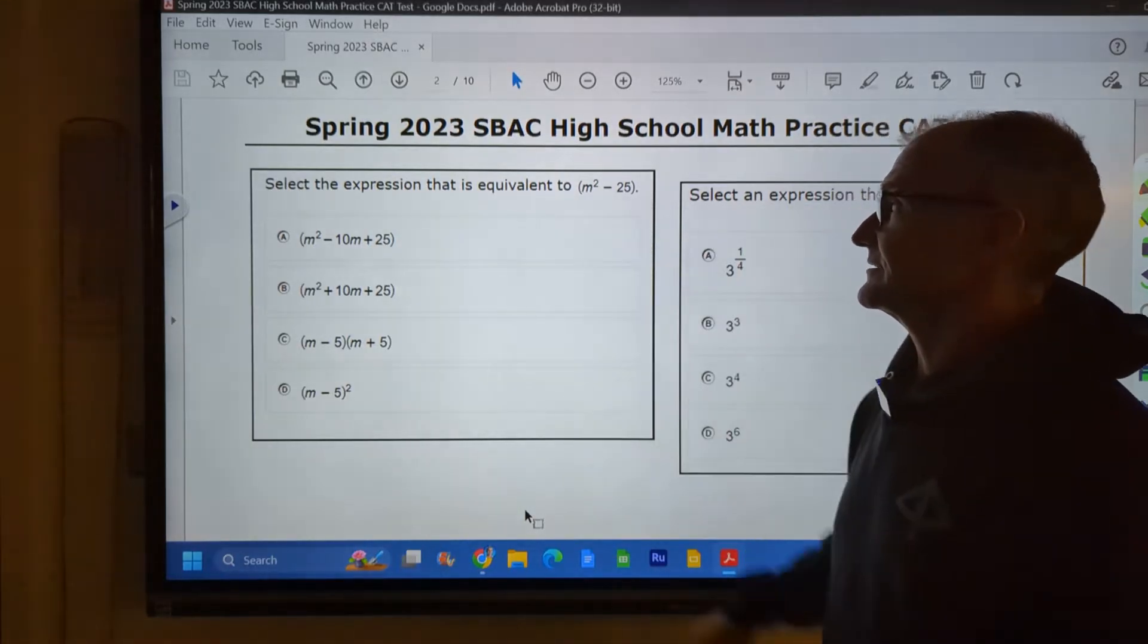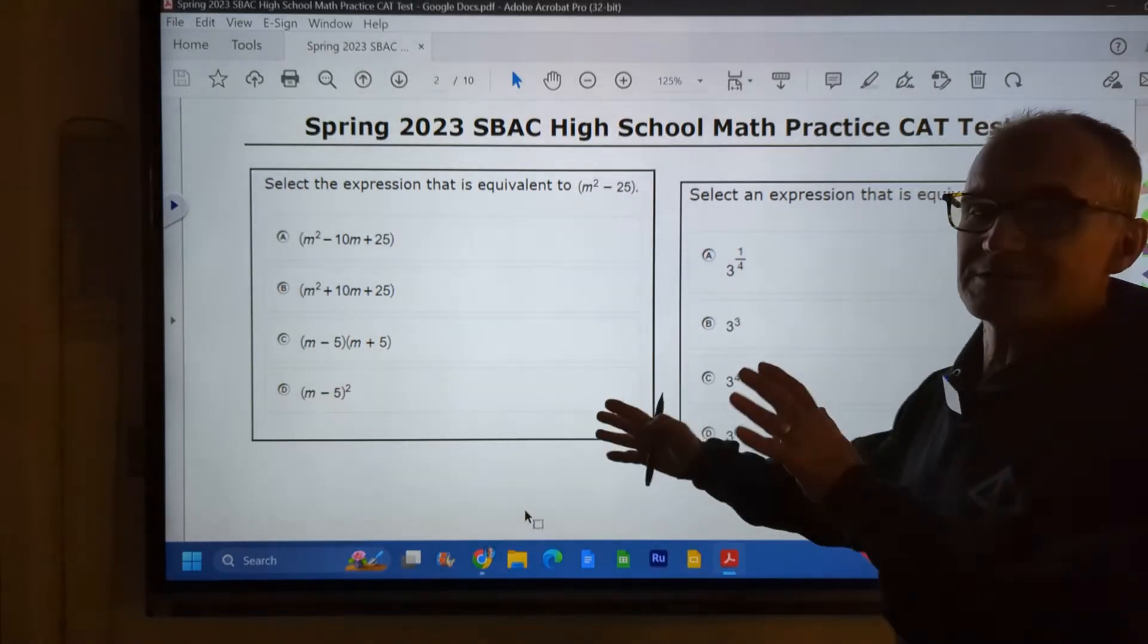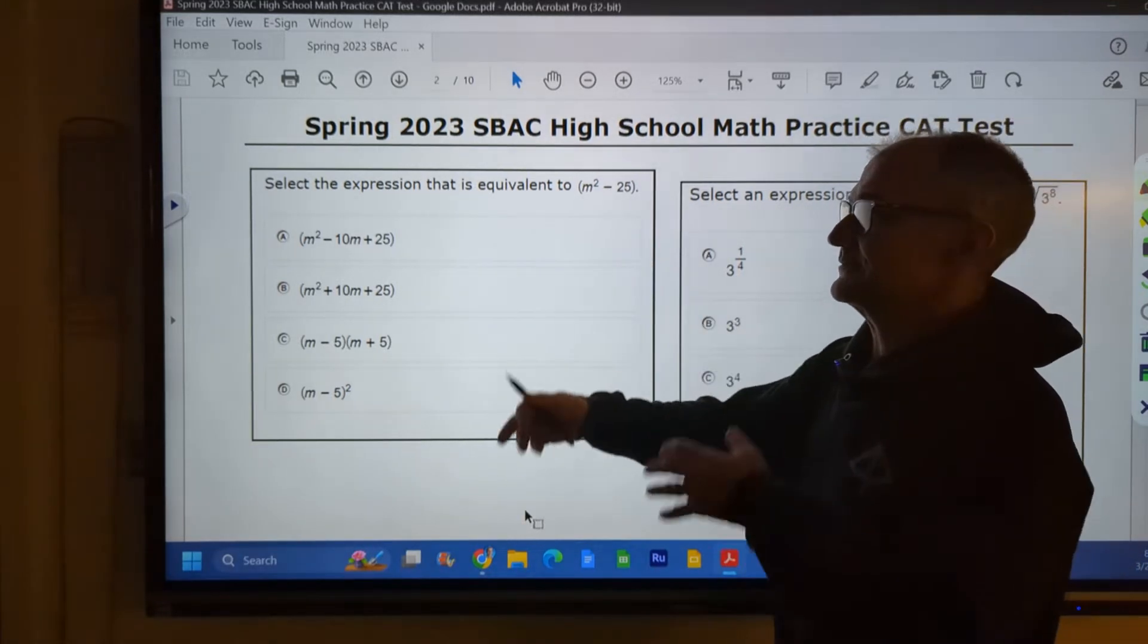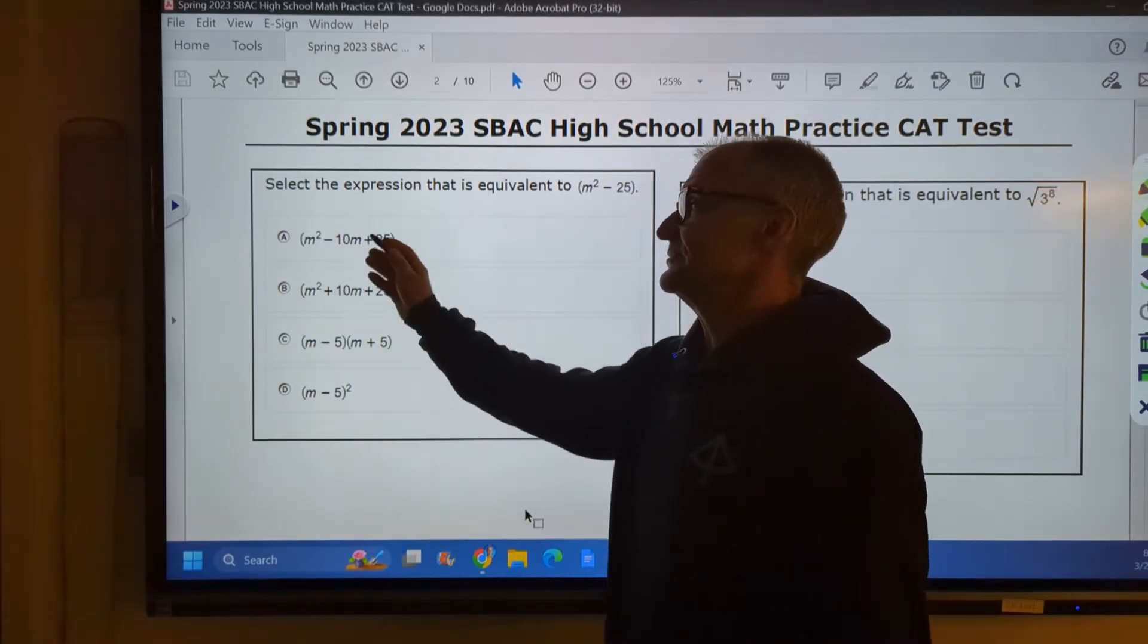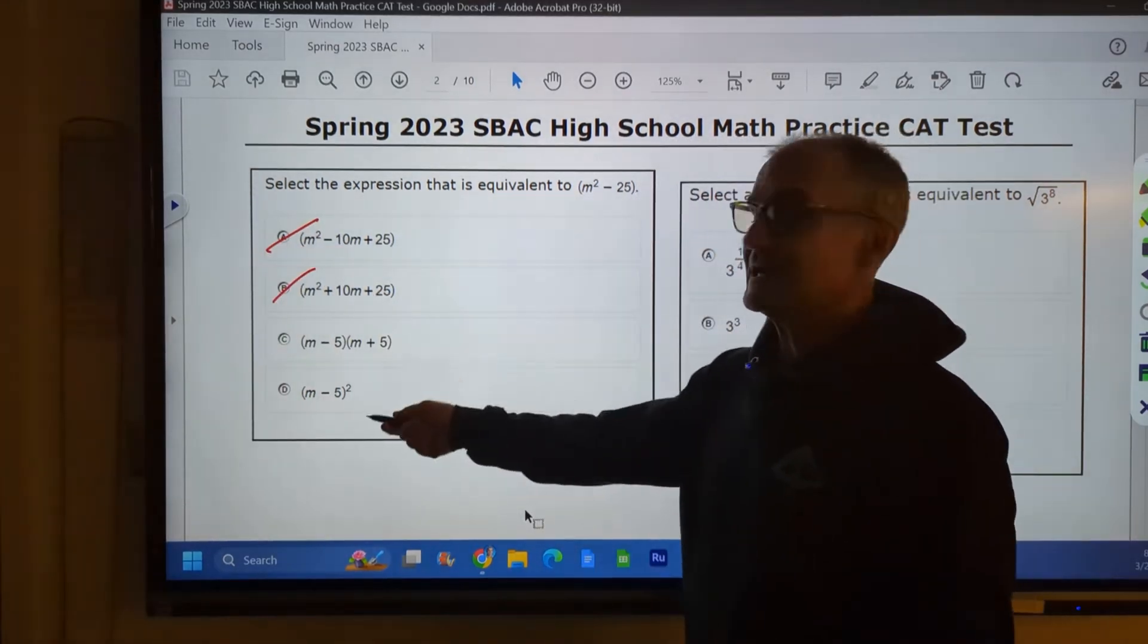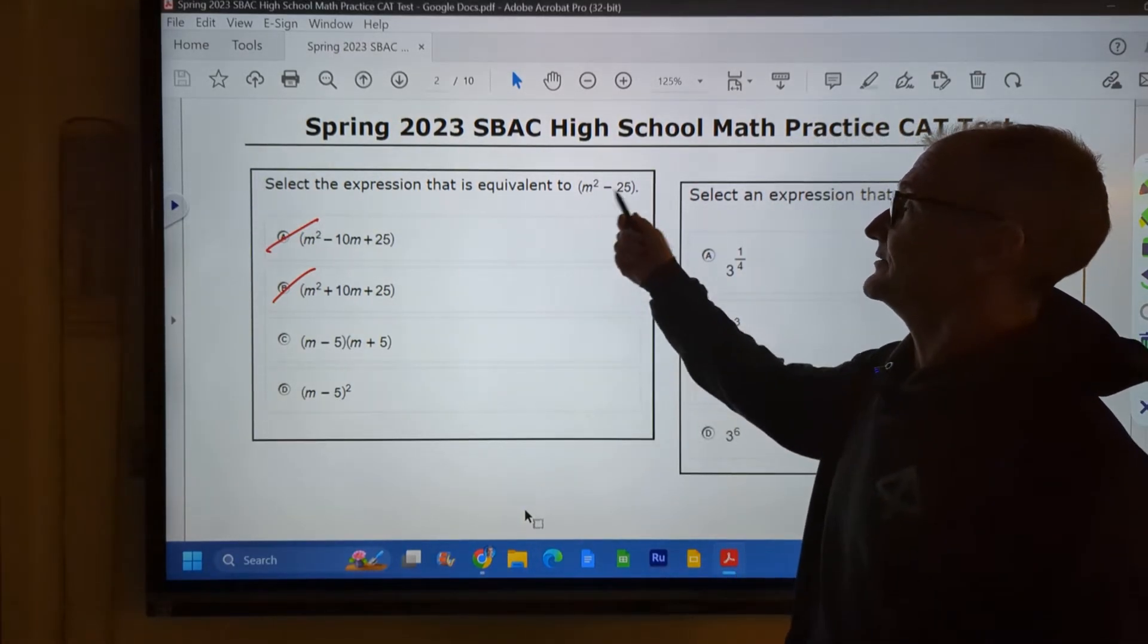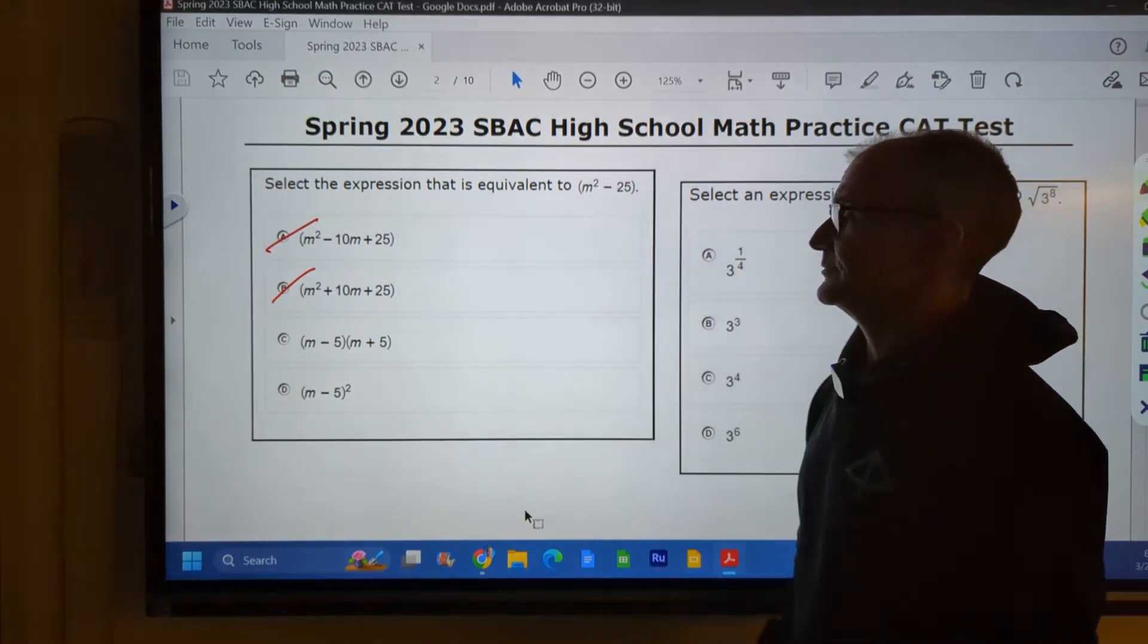So on number one right here, select the expression that is equivalent to M squared minus 25. So if I don't know anything about that and I got to come up with a solution, I just look at my answers. Well, if it's M squared minus 25, it can't be something different. It can't just automatically have some new numbers put in there. So that one makes no sense, that one makes no sense. And now I have two to choose from.